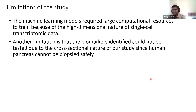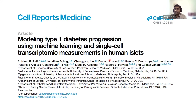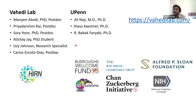There are some limitations to this study. First, most models take large amounts of computational time and resources, given the high-dimensional nature of the data with almost 200,000 cells, 50 donors, and different pairwise comparisons. The biomarkers identified could not be tested longitudinally because of the cross-sectional nature of the study, since human pancreas cannot be safely biopsied. This paper is published in Cell Reports Medicine, and we thank all collaborators from UPenn, including Dr. Najee, Dr. Kasner's lab, and Dr. Fariaghi's lab.